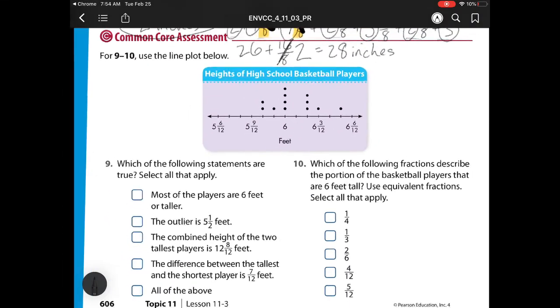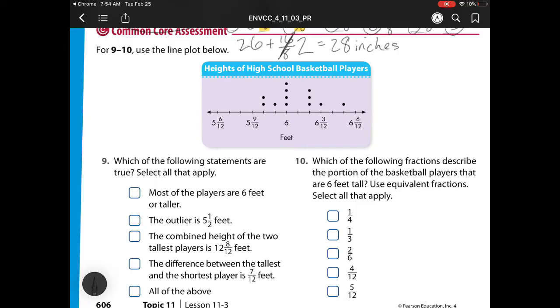Using the following statements and our line plot, which of the following are true? Most of the players are 6 feet or taller. Well, first we have to figure out what is our dot equal to. So our dot is a player. And our scale, remember, what are we talking about? How far is it to get from one to the other? Well, here would be 1, 2, 3. So my scale is 1 twelfth, because I'm counting by twelfths to get from 6 twelfths to 9 twelfths. So now let's check. How many total players are there? There's 1, 2, 3, 4, 5, 6, 7, 8, 9, 10, 11, 12. So there are 12 players.